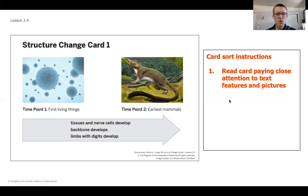The first thing you want to do is you want to start to read through the card. What is the information that it tells us? And then focusing in on specifically what are the evolutionary changes? So if I'm looking at this one, it's talking about from the first living things, which were these tiny cells, individual single-celled organisms to earliest mammals, all the things that had to evolve from here to here, tissues had to develop, nerve cells had to develop, backbones had to develop, limbs with digits. So there's a lot of things that had to change. Those are those evolutionary changes that you should look for on the next few cards that you're going to see. That's your step two.